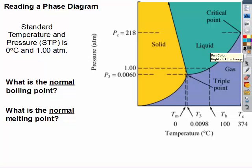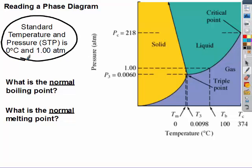Finally, you need to know where standard temperature and pressure is 0 degrees Celsius or 1 atm. Whenever something says normal boiling point, you're going to look for standard pressure.